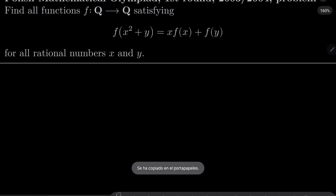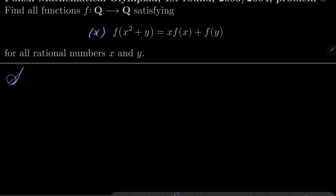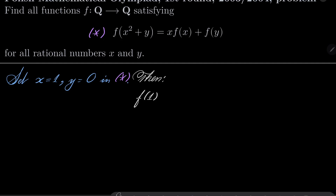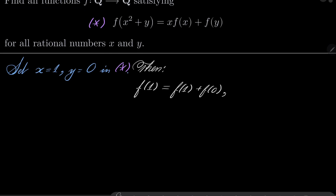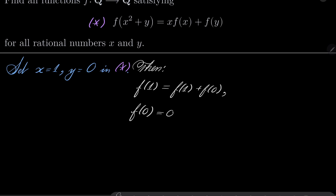Let's call our functional equation asterisk and I will start by setting x to be 1 and y to be 0 in condition asterisk. Notice that then we have f of 1 plus 0, which is f of 1, equals 1 times f of 1 plus f of 0. For this to be the case, obviously f of 0 must be equal to 0.